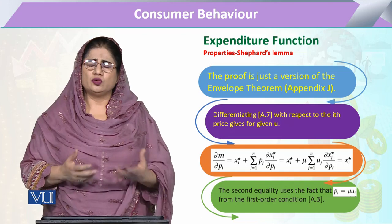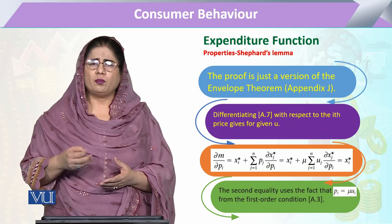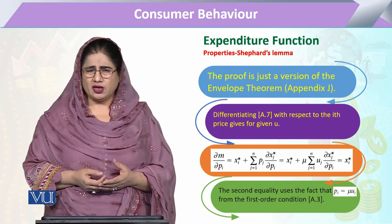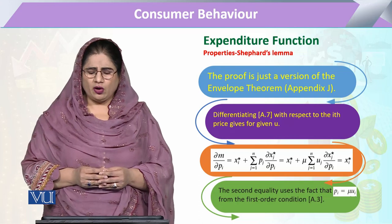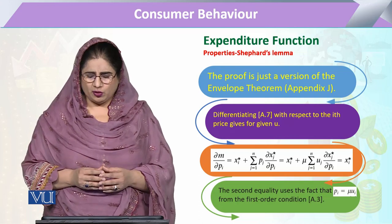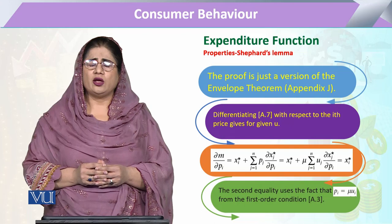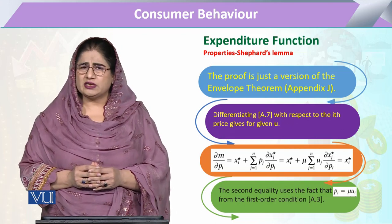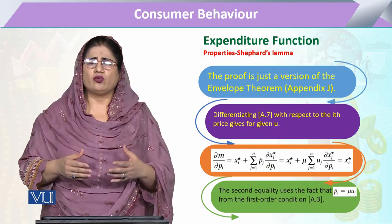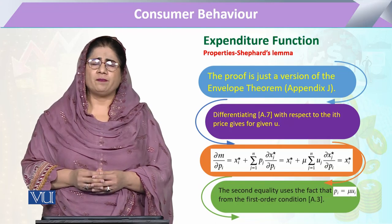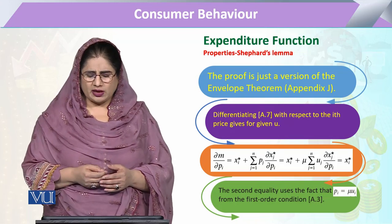As stated in our book chapters, this is a property of our expenditure function. It can be proved through the expenditure function via a formula that is a variant of the envelope theorem. If we look at this equation for differentiation, the change in the amount of expenditure with respect to the prices is what we examine.